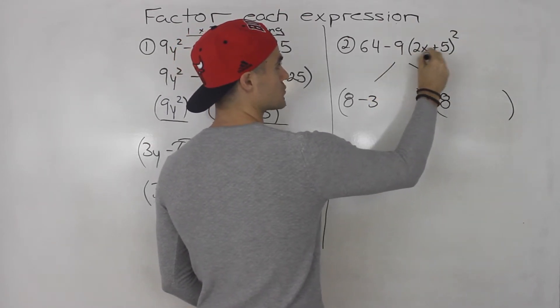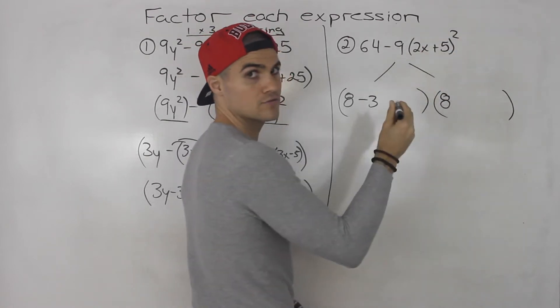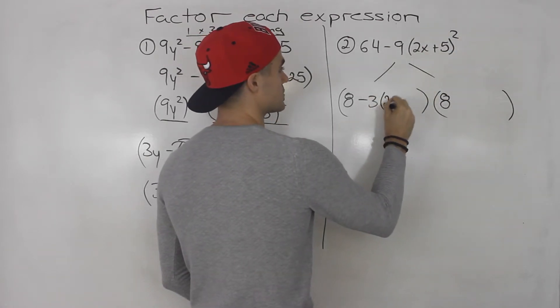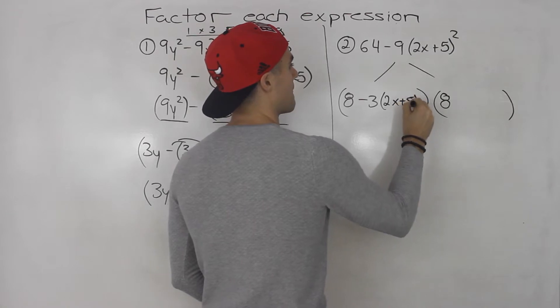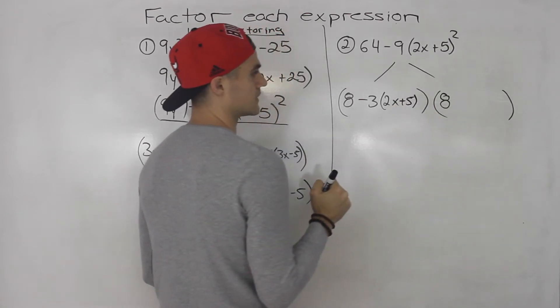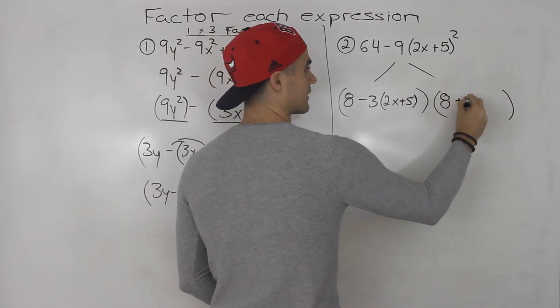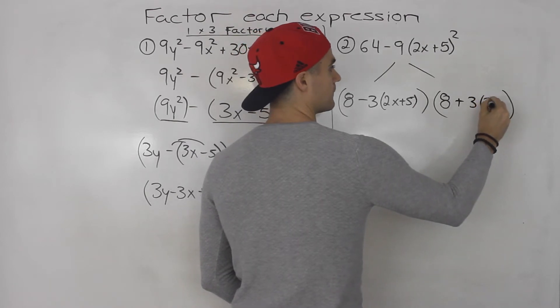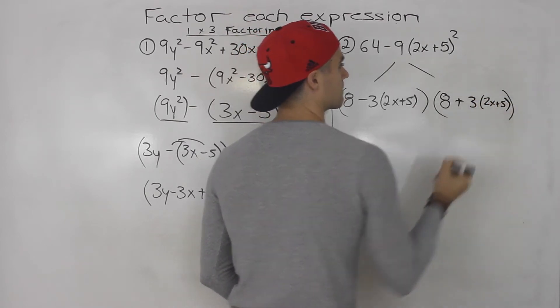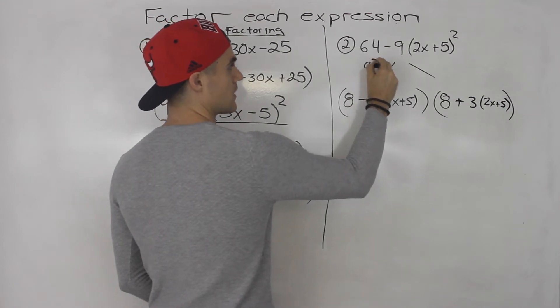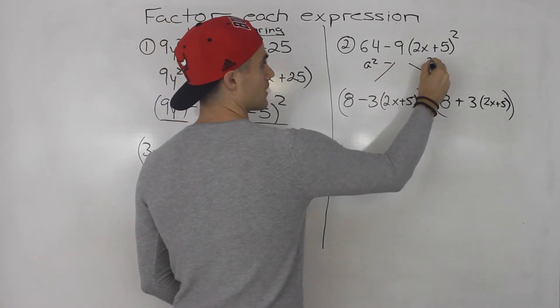Now the square root of this whole term is the square root of 9, which is 3. And then the square root of 2x plus 5 squared, the power of 2 would go away, so that would just be 2x plus 5 here. And then we're going to be adding that same term.